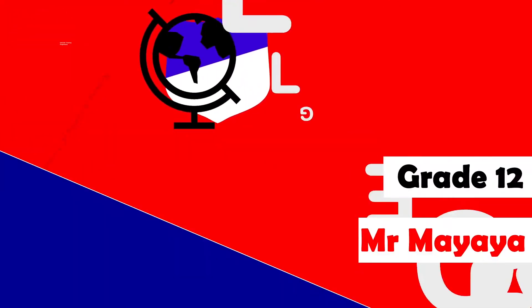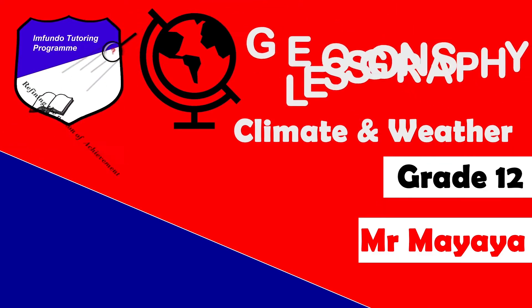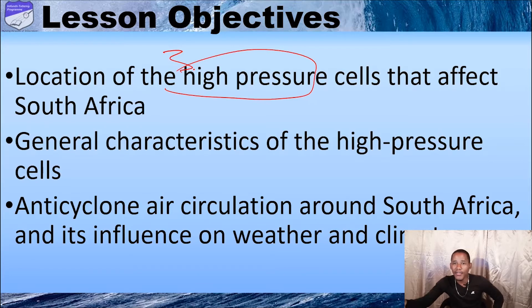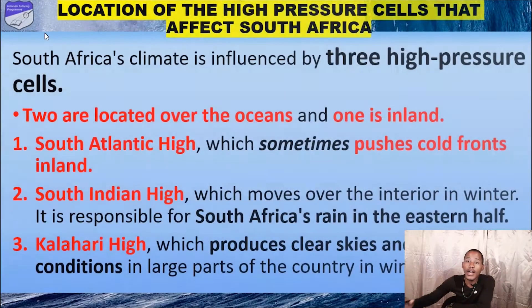By the end of the lesson we should be able to: list and explain the location of three high pressure cells that affect South Africa; discuss the general characteristics of these high pressure cells; and discuss and explain anticyclone air circulation around South Africa and how these three high pressure cells affect the climate of South Africa.